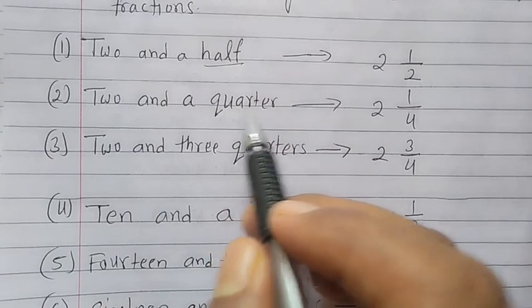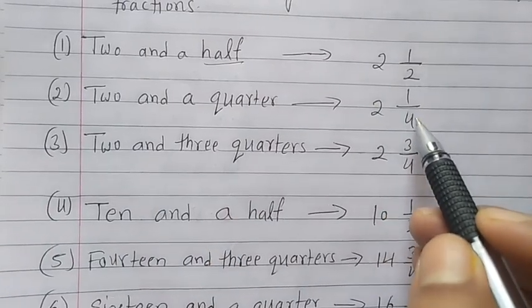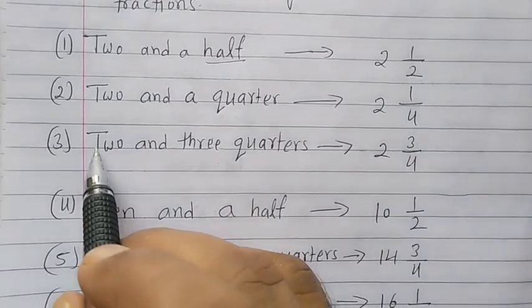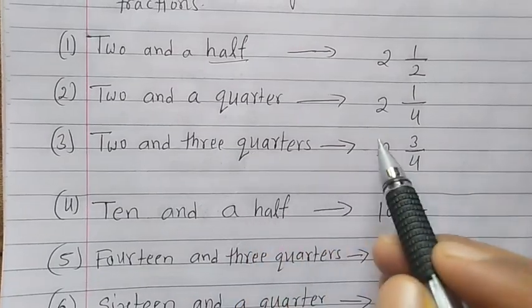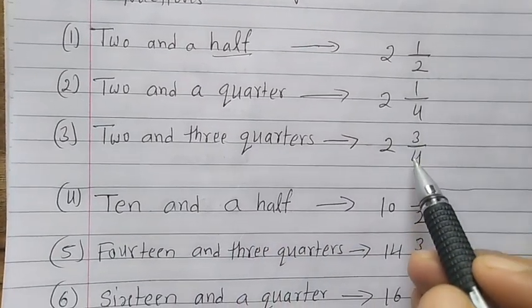Second question, two and quarters, write the 2, 1 upon 4. Third, two and three quarters, that means write 2, 3 upon 4.